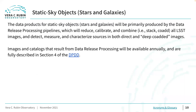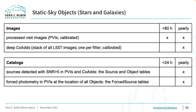The data products for static sky objects like stars and galaxies will be primarily produced by the data release processing pipelines, which will reduce, calibrate, and combine — or in other words, stack or co-add — all LSST images, and detect, measure, and characterize sources in both direct and deeply co-added images. Images and catalogs from data release processing will be available annually and are fully described in Section 4 of the DPDD. The images most relevant to static sky science will be the deep coadds. The catalogs most relevant to static sky science will be the object table, which includes measurements on deeply co-added images; the forced source catalog with forced photometry at the locations of all objects in all processed visit images; and the source catalog containing detections in HPVIs.